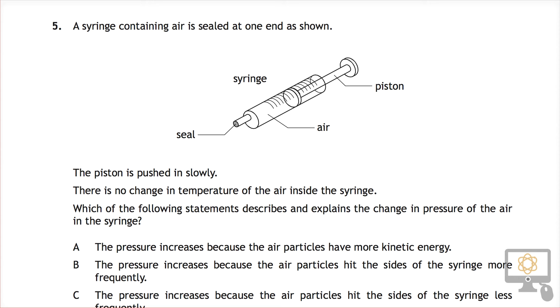Okay, so let's have a look at question 5 from the 2015 National 5 physics paper. It says a syringe containing air is sealed at one end, right here as shown. The piston is pushed in slowly. There's no change in the temperature of the air inside the syringe. That's quite an important point actually to make here.